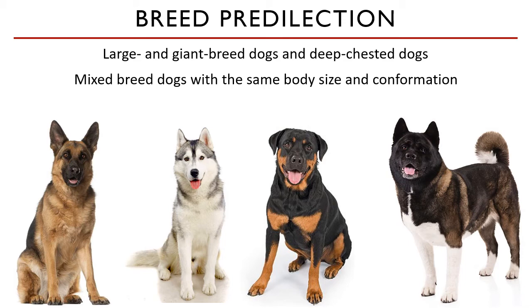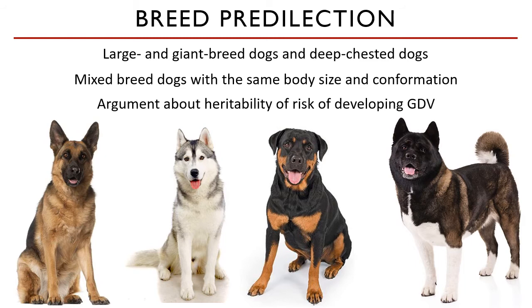The Great Dane in particular has an incidence rate of 42% in their eight-year lifespan. Mixed breed dogs with the same body size, conformation, or deep chests are also predisposed. There is an existing argument in the research industry about the heritability of GDV risk. Some researchers have found that first-order relatives of an affected dog have a markedly increased likelihood of developing GDV, meaning the progeny of an animal who suffered from GDV is at increased risk. The weakness of the ligaments holding the stomach may also be inherited.